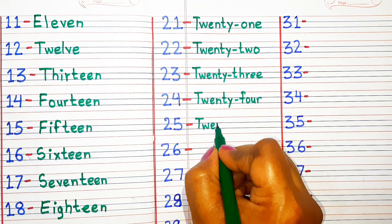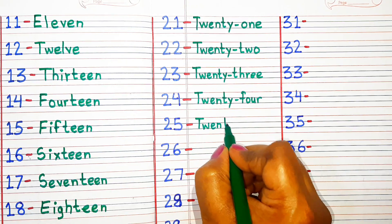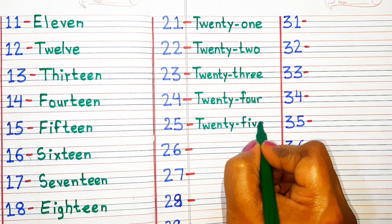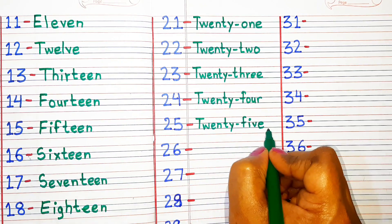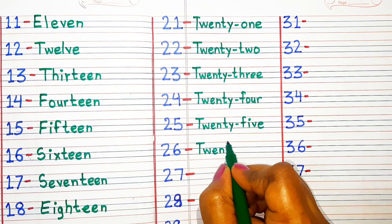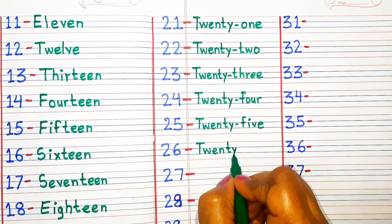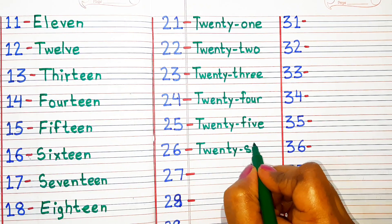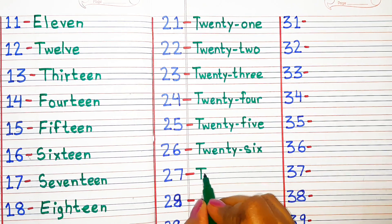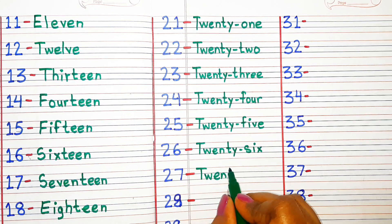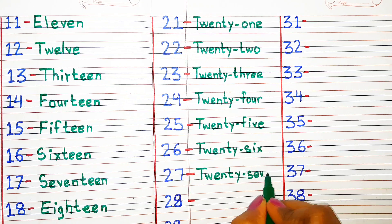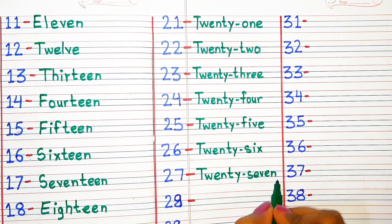T-W-E-N-T-Y-F-I-V-E 25. T-W-E-N-T-Y-S-I-X 26. T-W-E-N-T-Y-S-E-V-E-N 27.